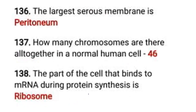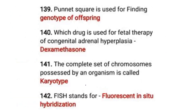The largest serous membrane is the peritoneum. How many chromosomes are there in a normal human cell? Forty-six. The part of the cell that binds to mRNA during protein synthesis is the ribosome. Punnett square is used for finding the genotype of offspring.